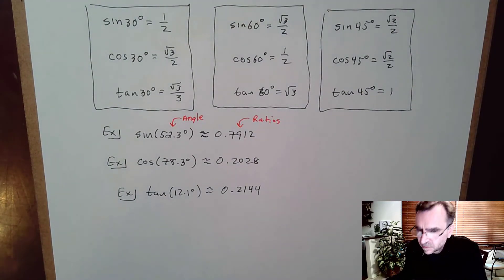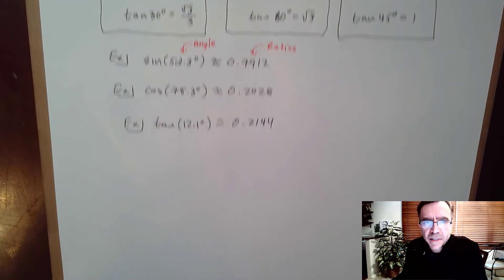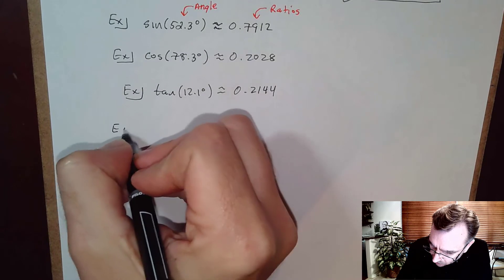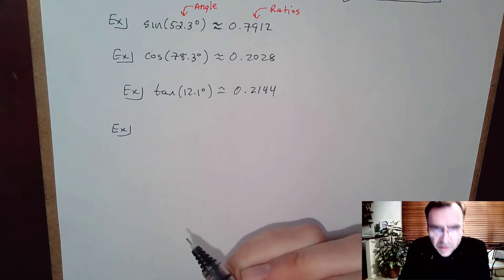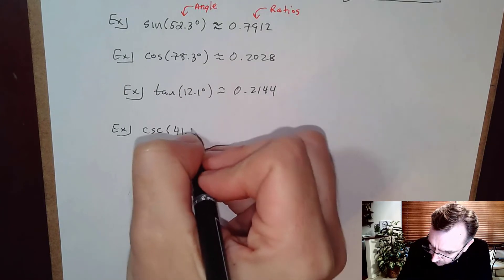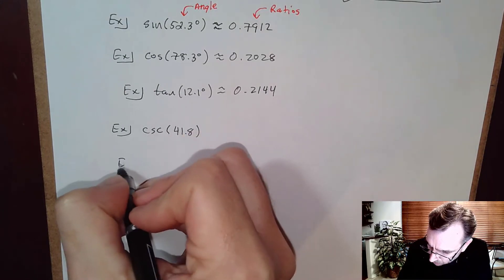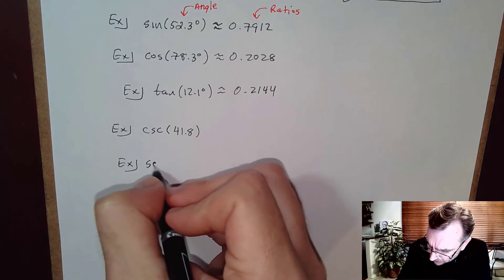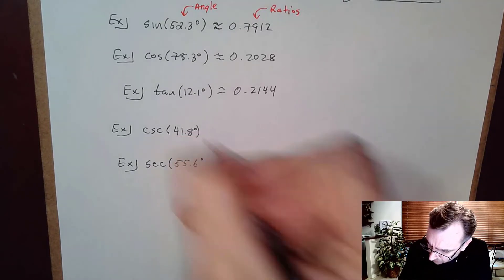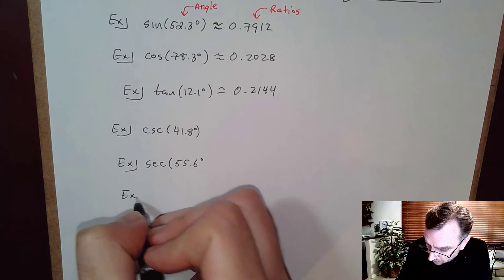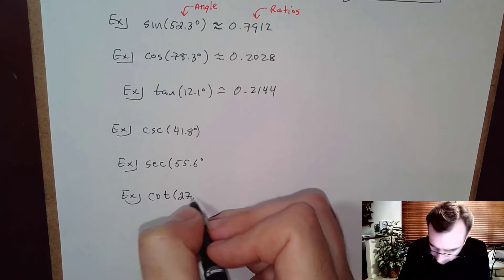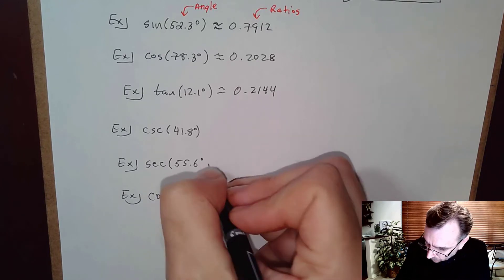So decimal degrees to one place and we're rounding ratios to four places. You should make a note of that. Next up are the reciprocals of those special ratios. Let's do cosecant of 41.8°, then secant of 55.6° - don't forget the degree symbol, that's going to matter later - and cotangent of 27.6°.